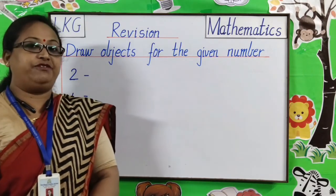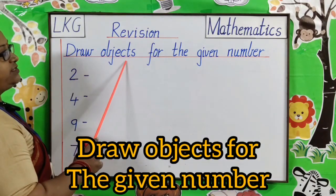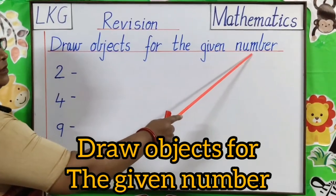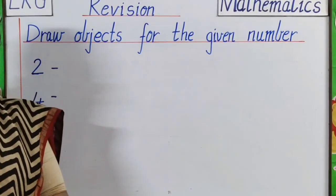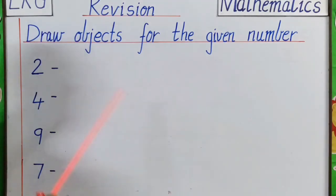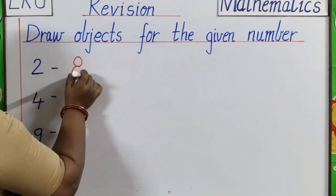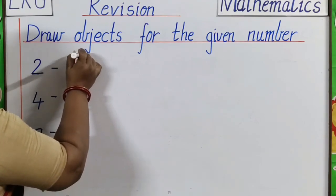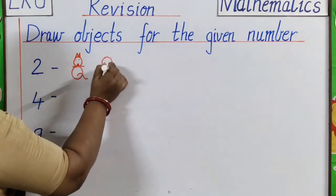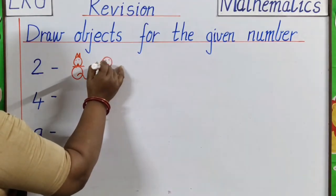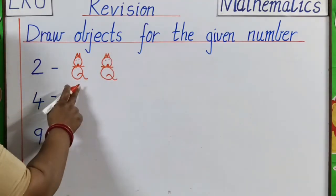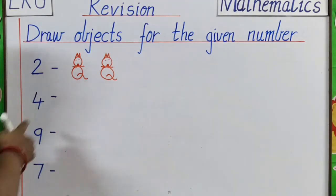Our next topic for revision is draw objects for the given number. Now children, we have already learned we have to draw objects according to the given number. So, what number is this? Two. What shall we draw here? Let's see. We will draw cats. One cat. Two cats. One, two. We have drawn two objects.